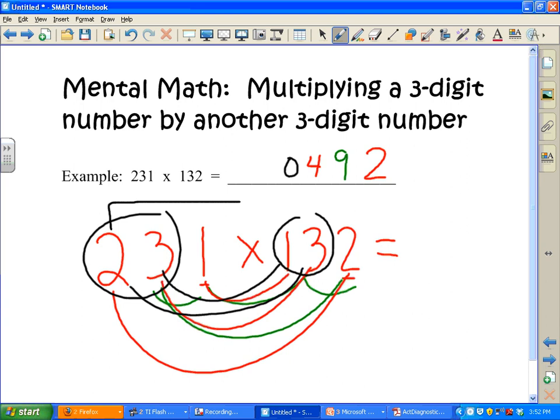And the last step is the first digit with the first digit here, 2 times 1, that's 2, plus the 1 that we carry is 3. So the answer is 30,492.